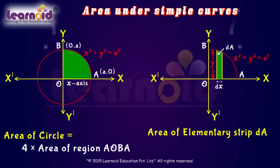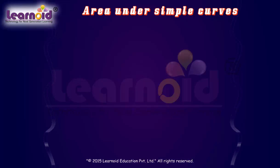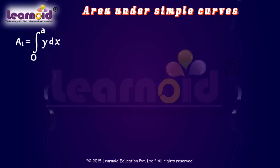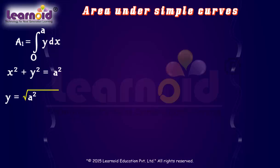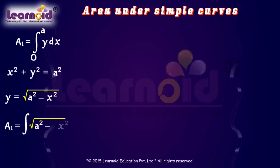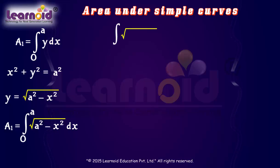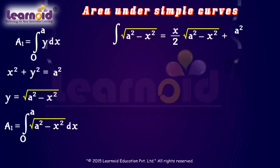The area of the elementary strip dA equals y·dx. The area of the circle in the first quadrant, A1, equals the definite integral of y·dx from x = 0 to x = a. Since x² + y² = a², we can write y as a function of x: y = √(a² − x²). Substituting into the area formula, A1 = integral of √(a² − x²)dx from 0 to a. The integral of √(a² − x²) is (x/2)√(a² − x²) + (a²/2)sin⁻¹(x/a).